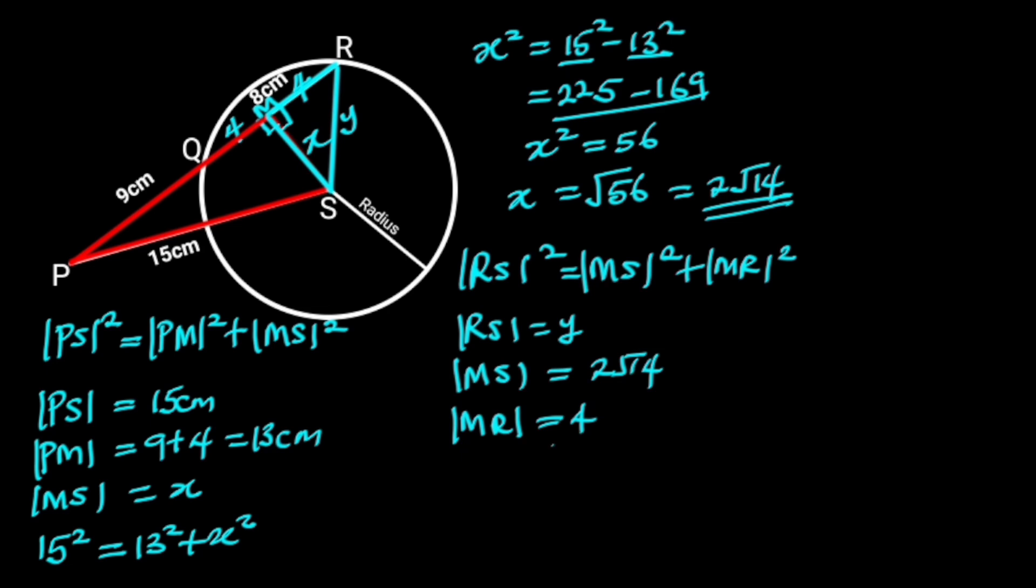Substituting the values in the above equation, it follows that Y squared is equal to 2 root 14 squared plus 4 squared. 2 root 14 squared is 56, and 4 squared is 16.